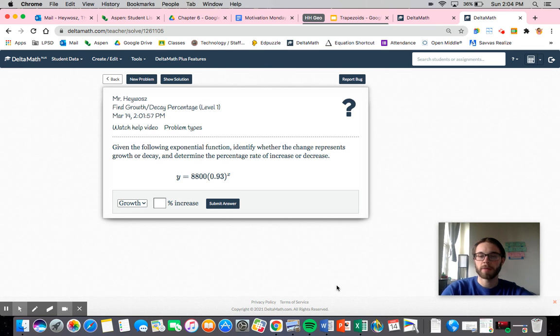So as a reminder, exponential functions are of the form f(x) equals a times b to the x, where a is your initial amount or your principal amount or starting value, and b is your ratio, that's what you're raising to the exponent.